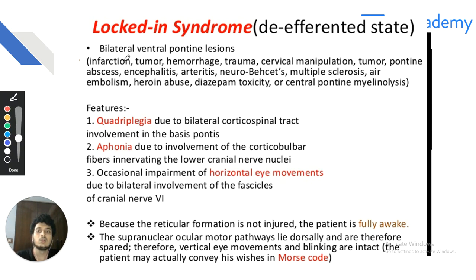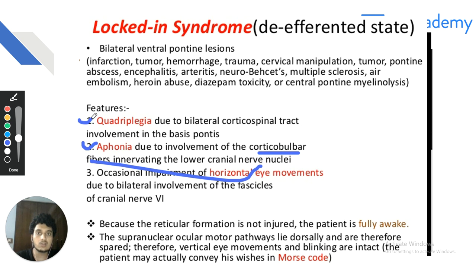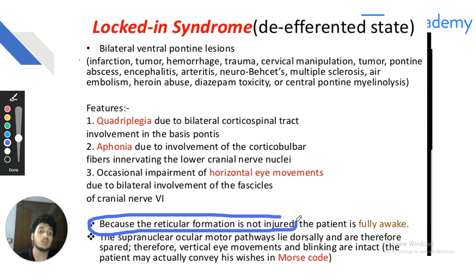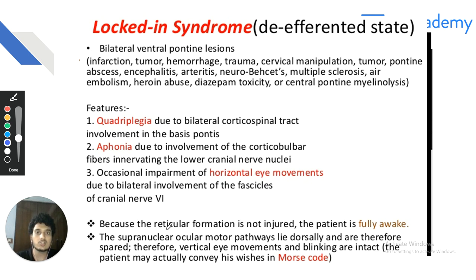Bilateral ventral pontine lesions produce locked-in syndrome or spastic quadriplegia — quadriplegia due to bilateral corticospinal tract involvement, aphonia due to corticobulbar fiber involvement. Importantly, the reticular formation is not injured in pontine hemorrhage, so the patient is fully awake and alert. The supranuclear ocular pathways are also not involved. The patient can actually communicate wishes in Morse code — this can be a potential examination question.